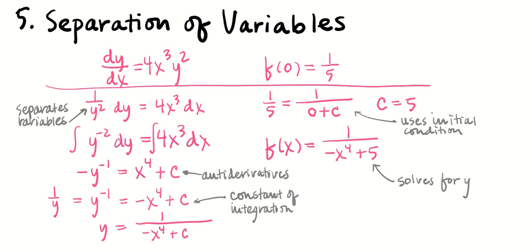Sometimes each antiderivative is worth one point (making it worth 6), and the plus c and use of initial condition may be merged into one point. There's typically a maximum of 2 out of 5 if there's no plus c — because how can you find the value of c without it? Write the plus c as soon as you antidifferentiate, not at a later step. The final point is for solving for y explicitly — an implicit formula like '1/y equals x⁴ plus 5' will not get the job done.